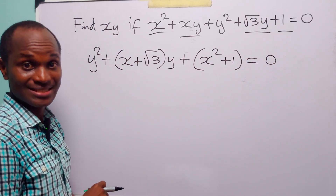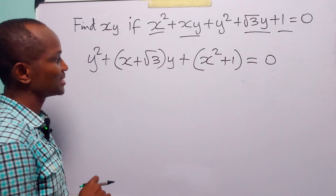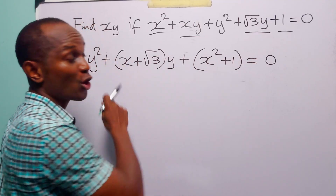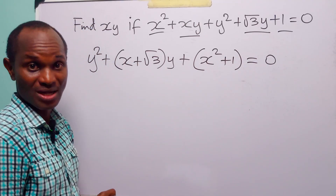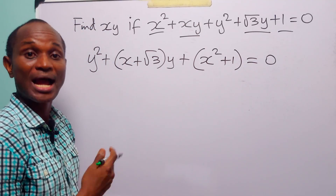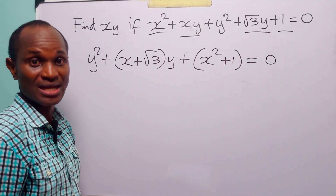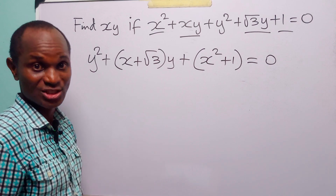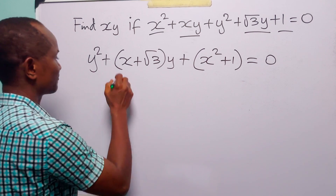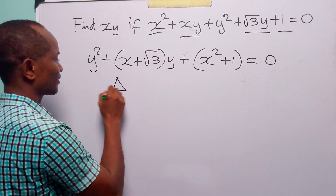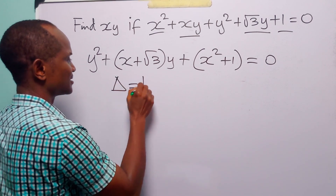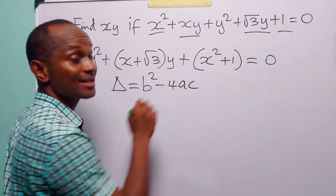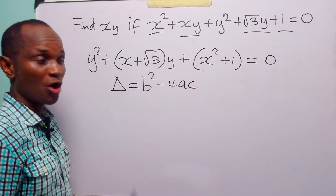The next thing we are going to do is study the behavior of this quadratic equation. To do that, we will use its discriminant, that is b squared minus 4ac.